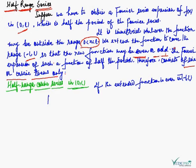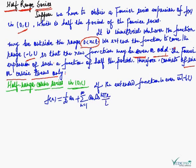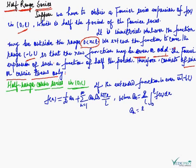The half-range cosine series is given by the formula: f(x) = (a₀/2) + summation n=1 to infinity of aₙ cos(nπx/l), where the value of a₀ = (2/l) integral from 0 to l of f(x) dx, and aₙ = (2/l) integral from 0 to l of f(x) cos(nπx/l) dx.